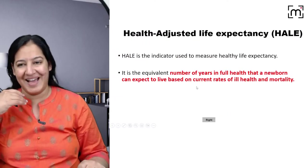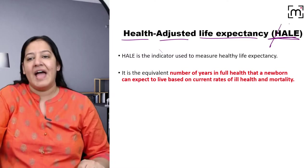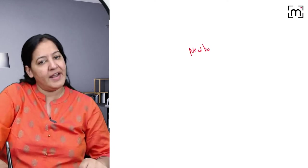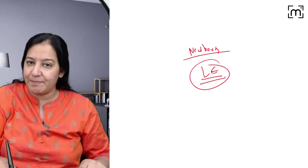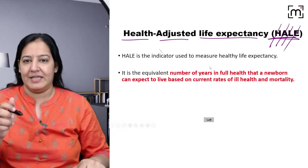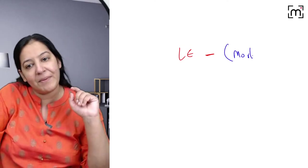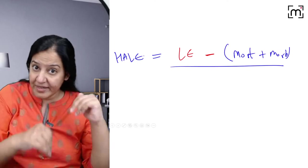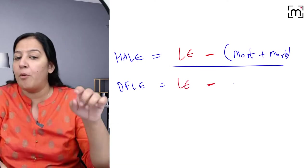The second indicator is HALE — Health Adjusted Life Expectancy. It is also similar: imagine a newborn is born today in India. We expect how many years the newborn will live according to the current life expectancy of that country. But here, we deduce both mortality plus morbidity. Whatever result we get is known as Health Adjusted Life Expectancy.